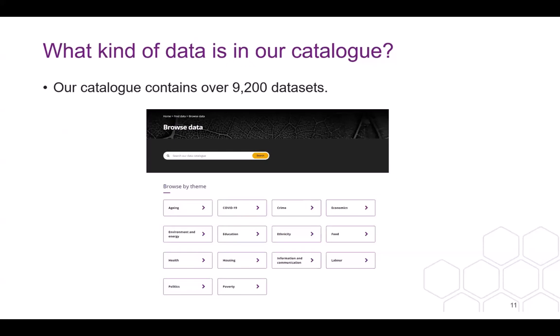If you're wondering how many studies we hold in our catalogue, the answer would currently be more than 9,200 datasets. The Find Data tab on the homepage has a section where you can browse and access data, and by clicking through you will come to the Browse by Theme page. We hold data on a number of topics including ageing, COVID-19, crime, economics, environment and energy, education, ethnicity, food, health, housing, information and communication, labour, politics and poverty. You can also browse by data type, which we will cover further over the next few slides.